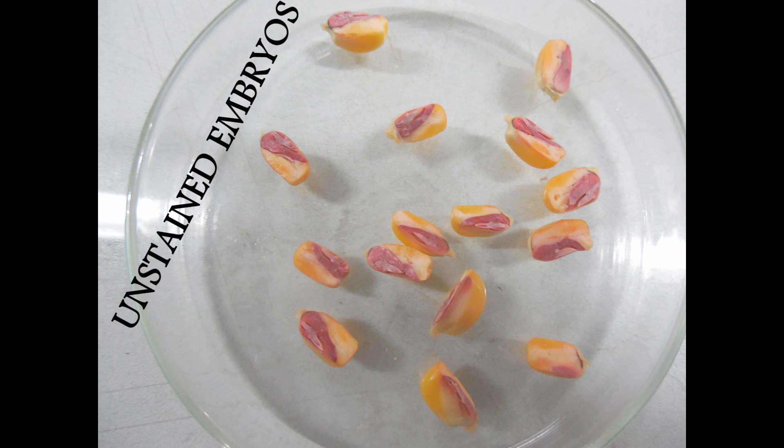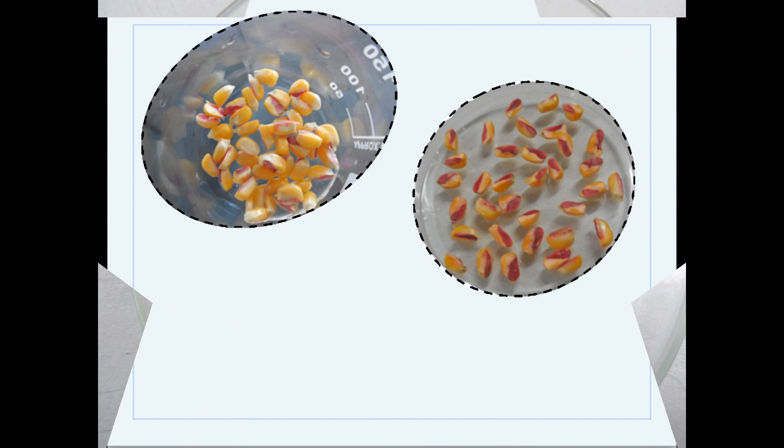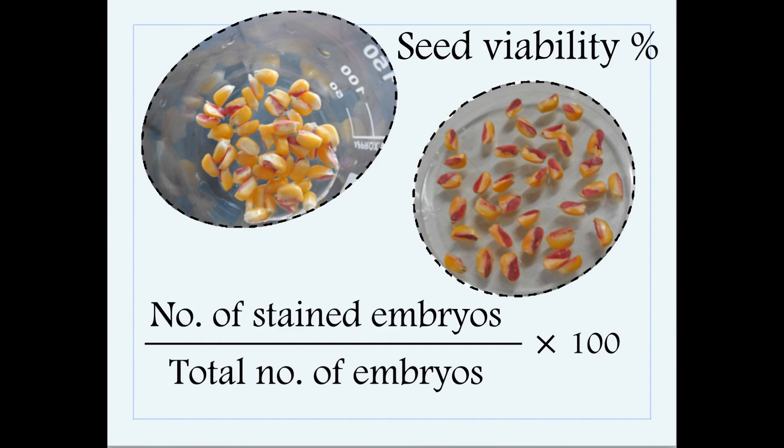Unstained embryo. Seed viability percentage is equal to the total number of stained embryos divided by the total number of embryos, multiplied by 100.